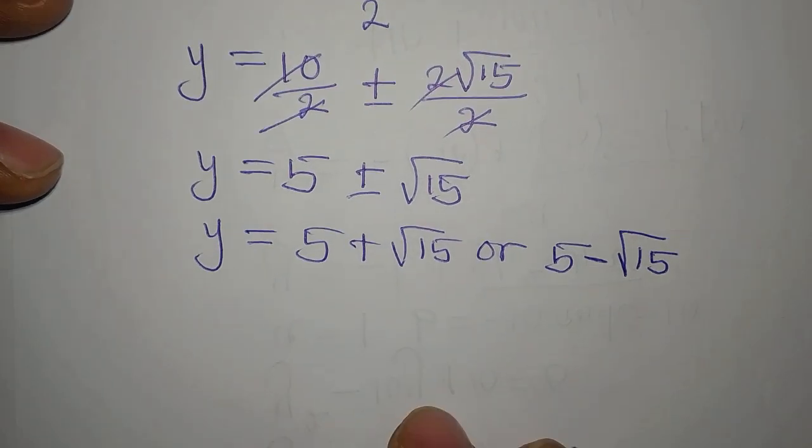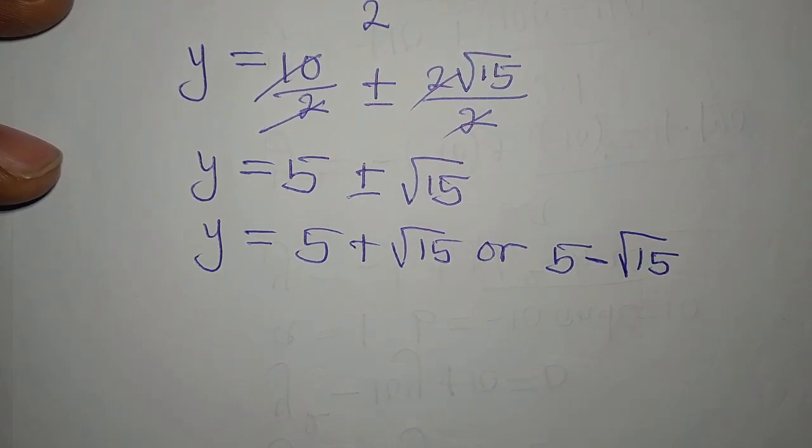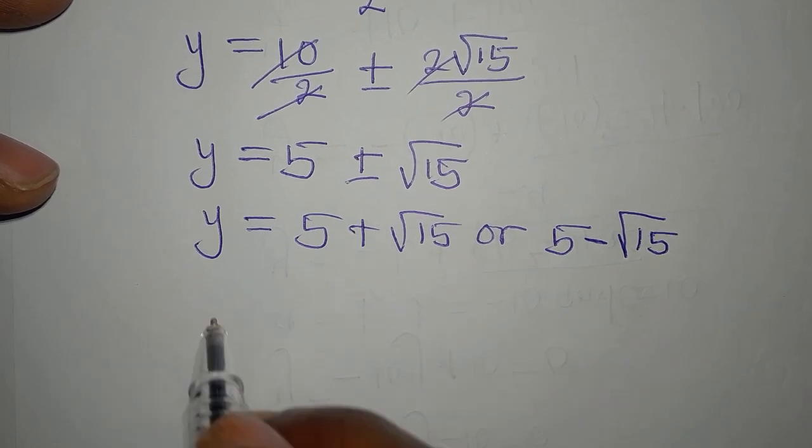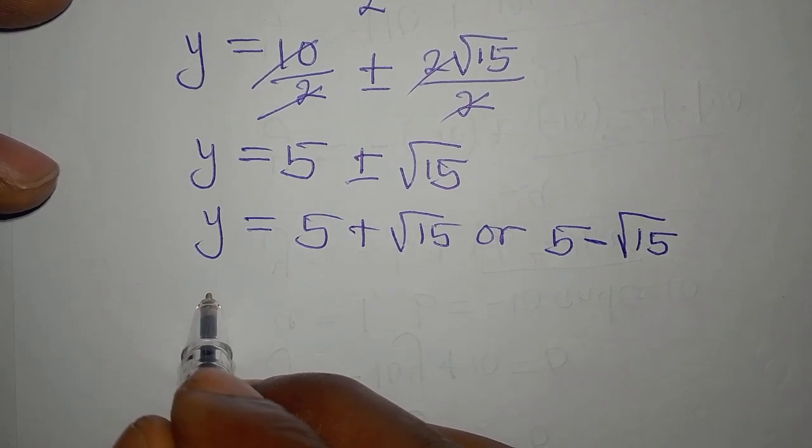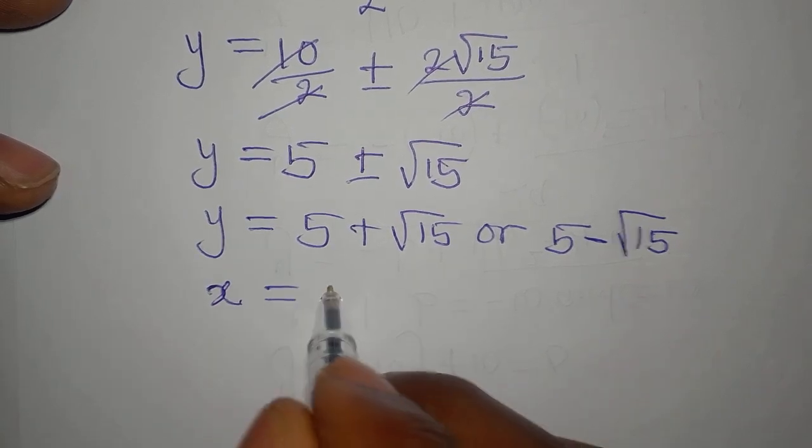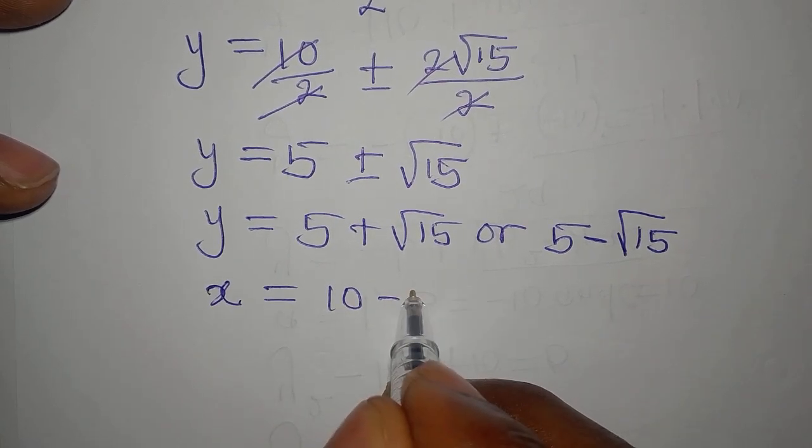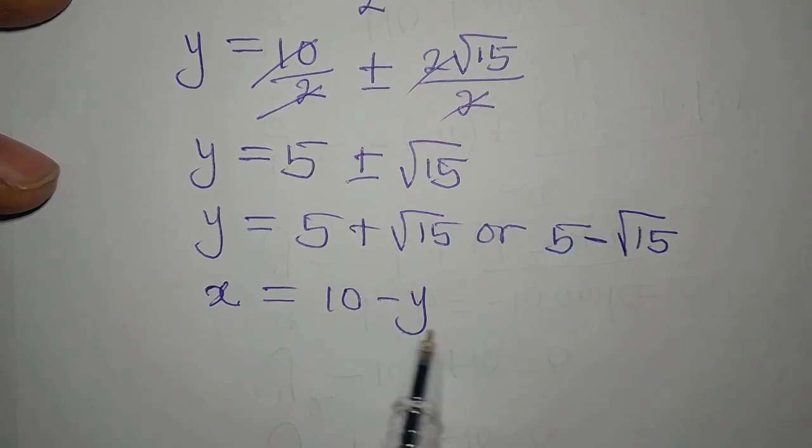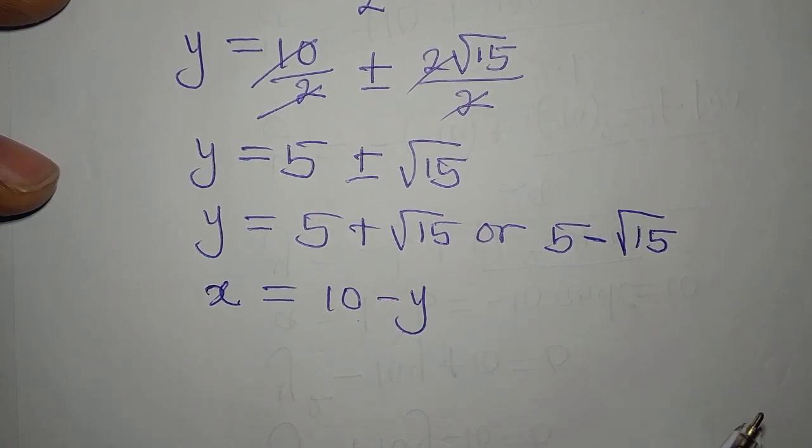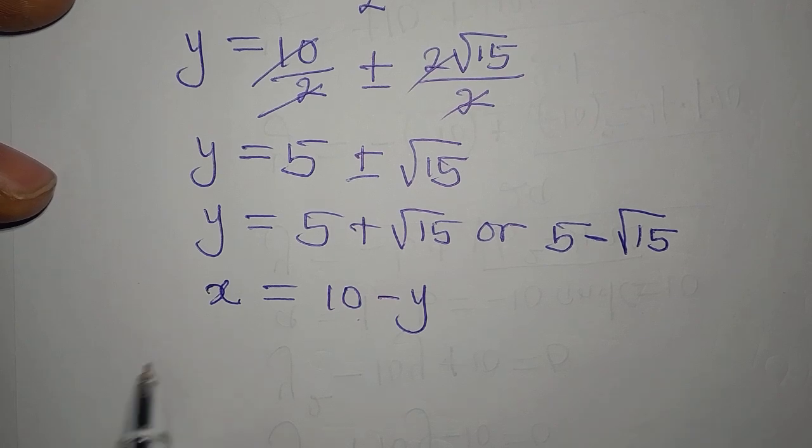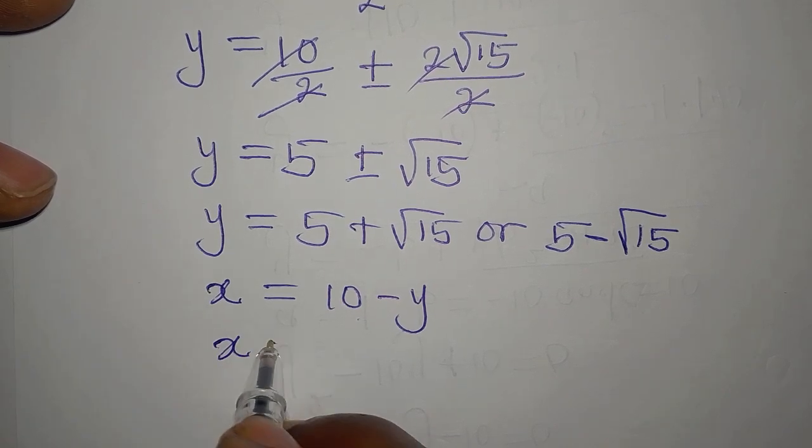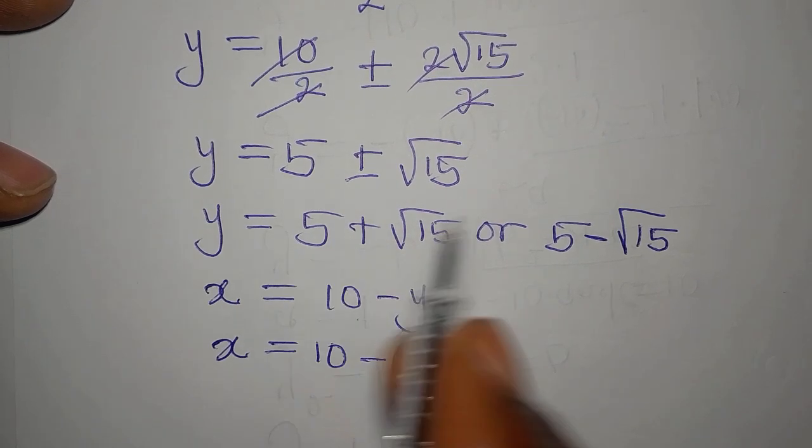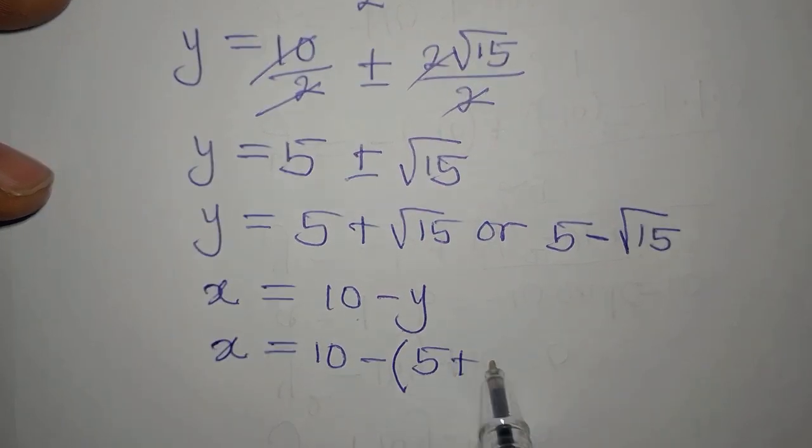And then remember that we still have our equation 3, which is x equals 10 minus y. So now that we have the value of y, we can put it here to get our corresponding value of x. So x will now be 10 minus, what is y here? 5 plus root 15.